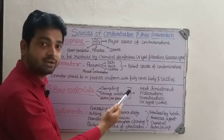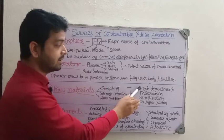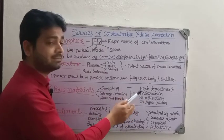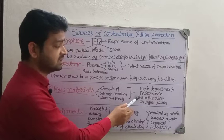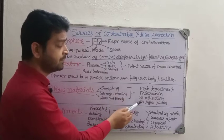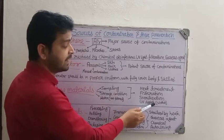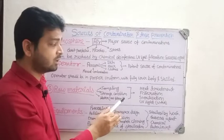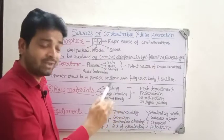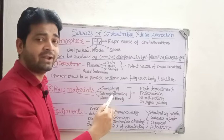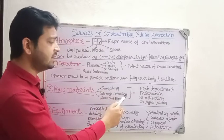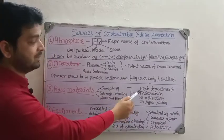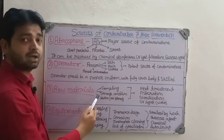To avoid contamination from raw materials, heat sterilization can be done depending on the sample and type of raw material. Filtration can be done, and different types of dry heat or moist heat sterilization can be applied. UV treatment can be done for water to kill, inhibit, or inactivate microorganisms. These are the preventive measures for raw materials.